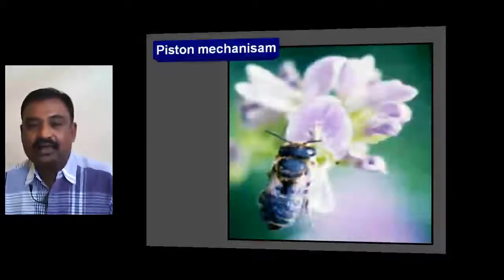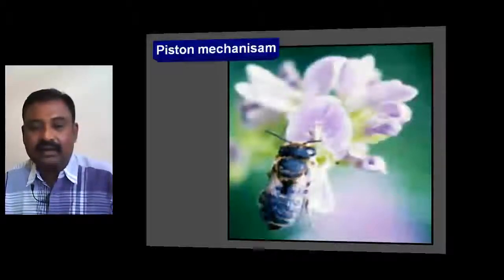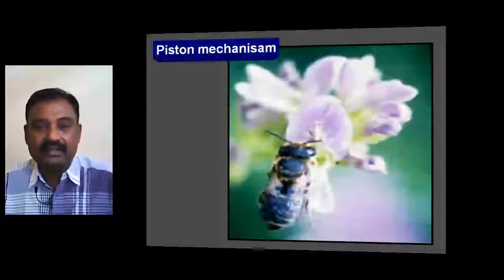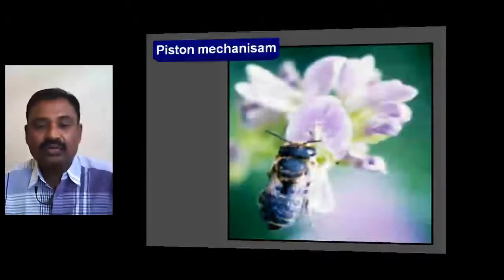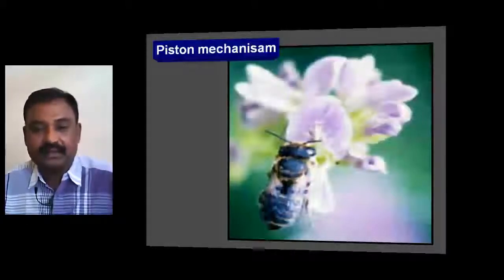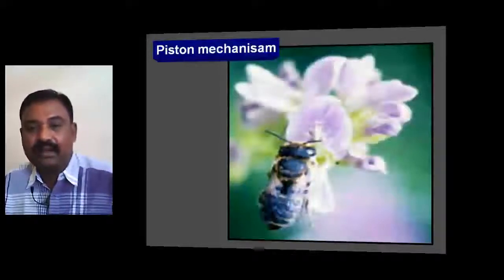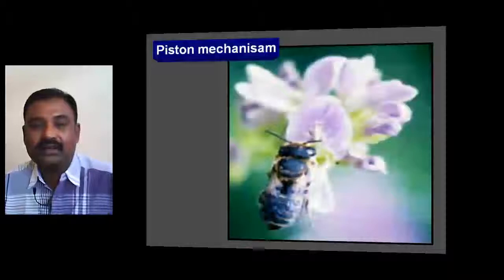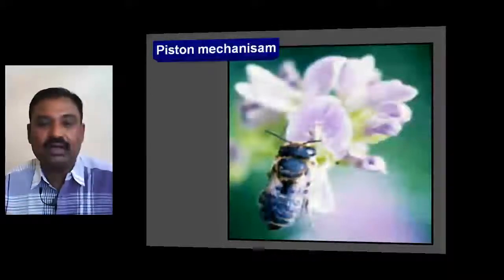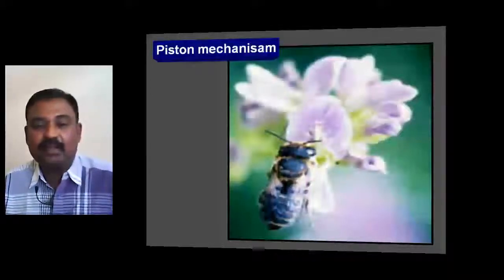The insect flies to the flower and takes rest on the wing petal. Later, the essential organs — the stamen and gynoecium's stigma — come out from the keel petal and touch the surface of the insect. Due to this mechanism, cross-pollination occurs in Fabaceae members. This kind of mechanism is called the piston type of pollination mechanism.